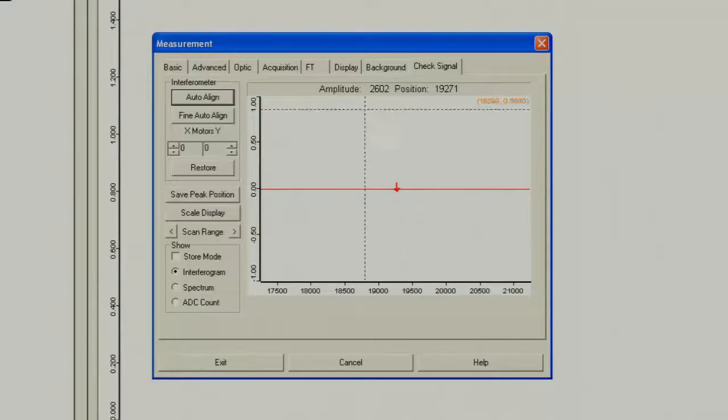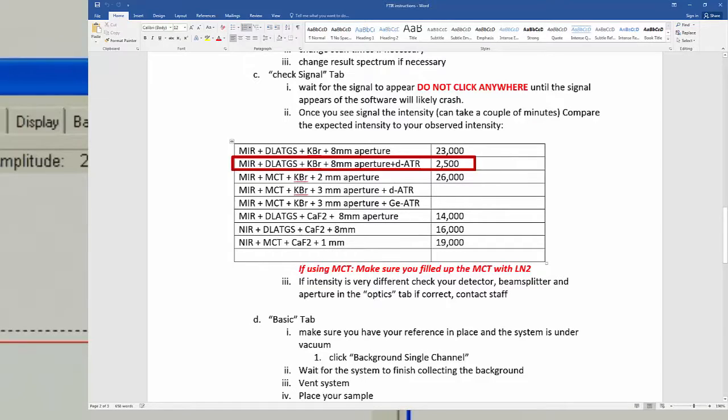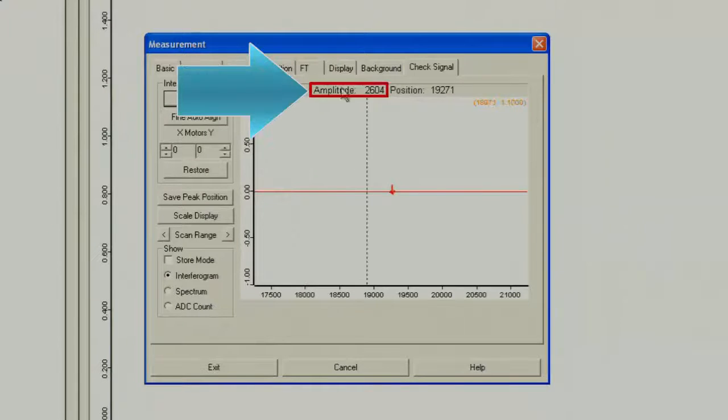Now there is a signal. If you look at the instruction table for the MIR, DLA TGS, and the Diamond ATR, the intensity should be about 2500 or more. For this example, you can see the intensity is about 2600. So there is more than enough, and the system is working properly.